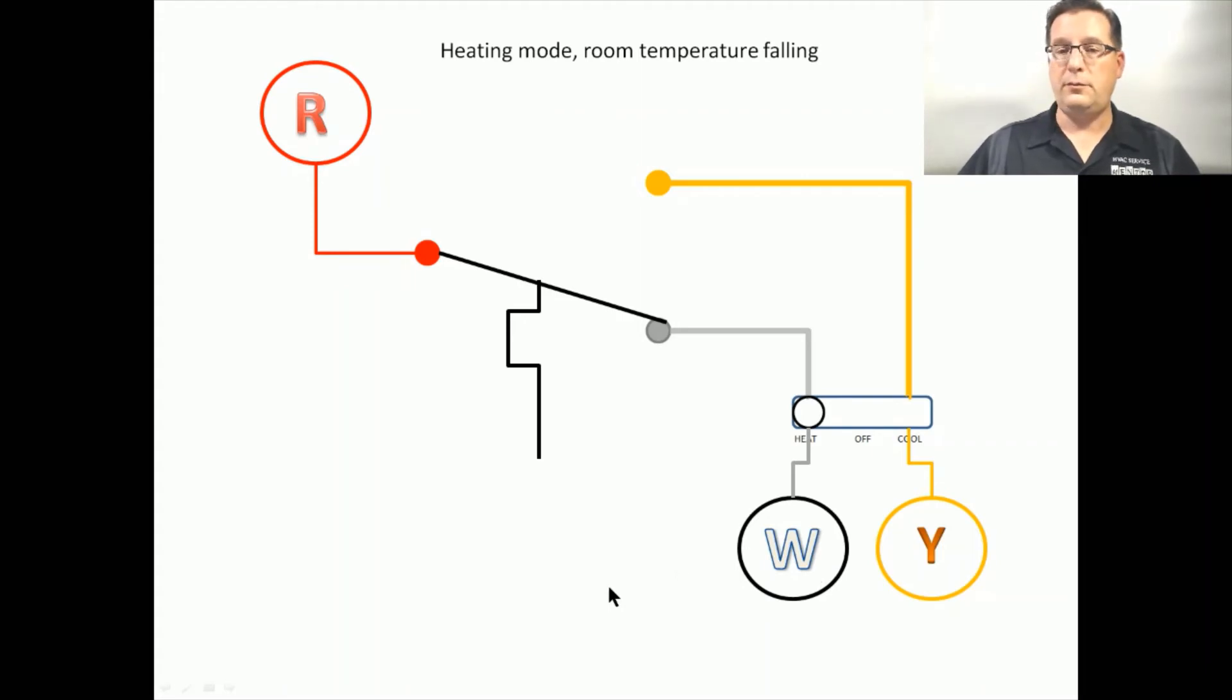As the heat is on, room temperature is going to start rising back upward again. As room temperature rises, that is going to push that thermostat back in the opposite direction. Now because of our mode switch, even though we are closed between R and Y, we can't actually energize the cooling equipment because our mode switch is only complete on the heating side, not on the cooling side.